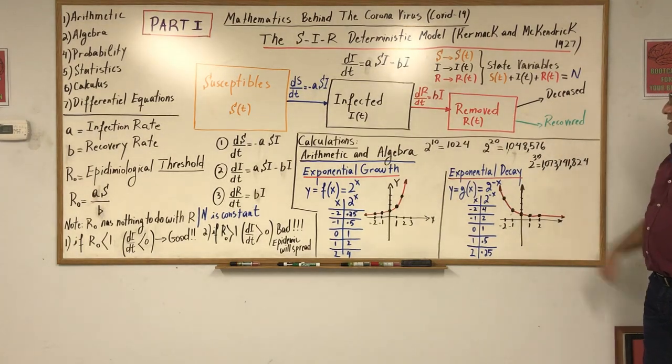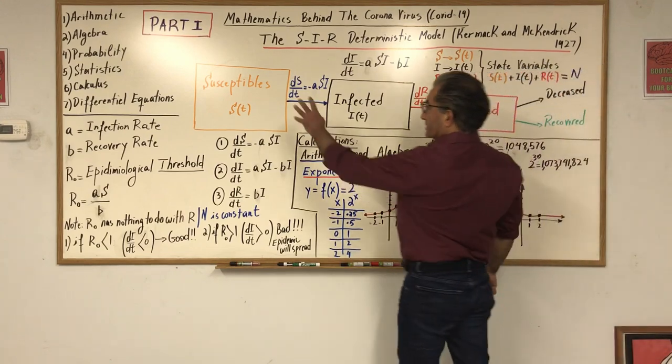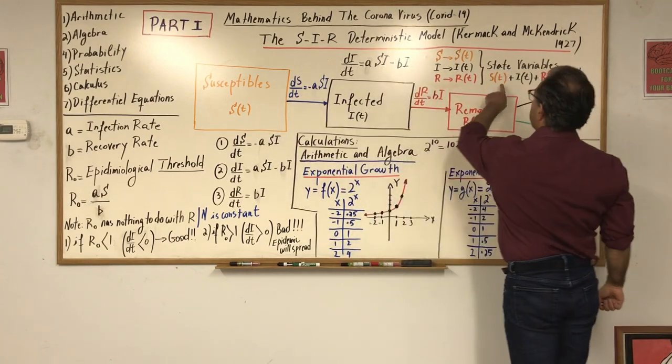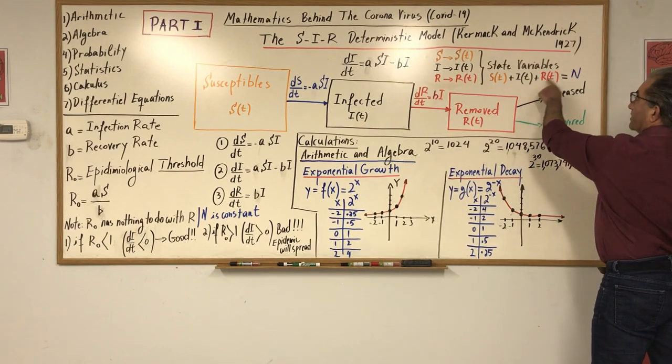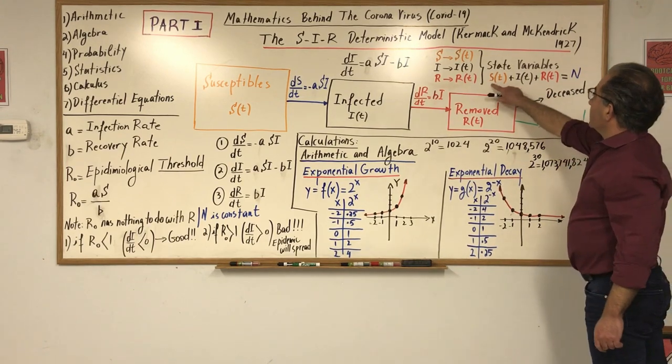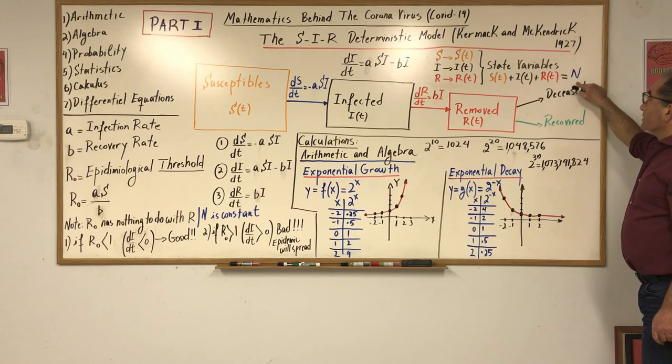So we have susceptible S plus infected I plus R, and if we add all these three we get n. N is the number of people that can be in a city, in a country, or even the entire world. It works exactly the same way.